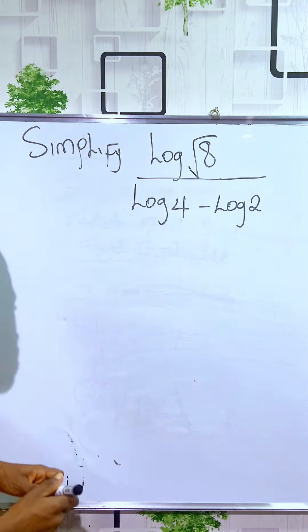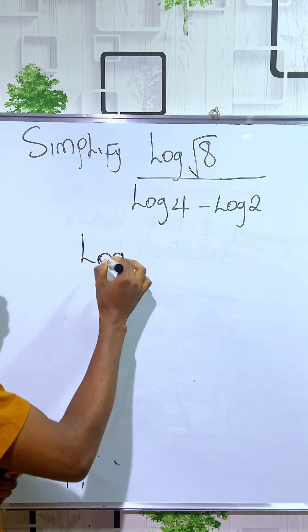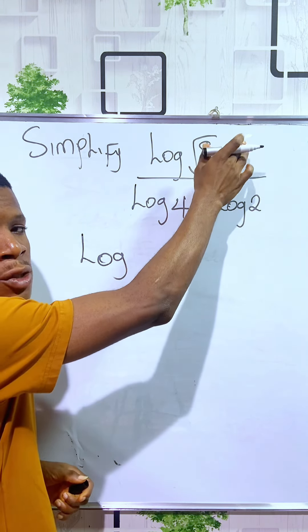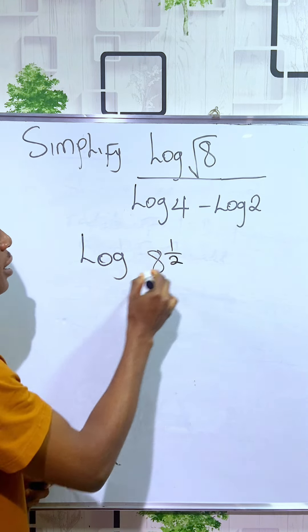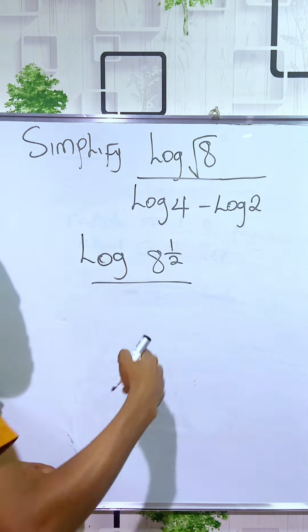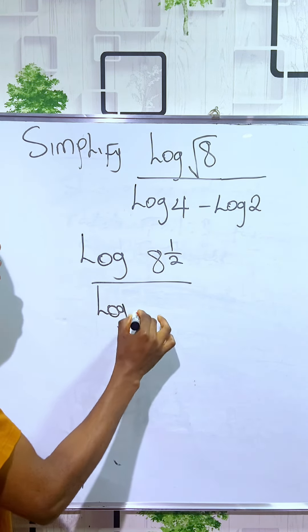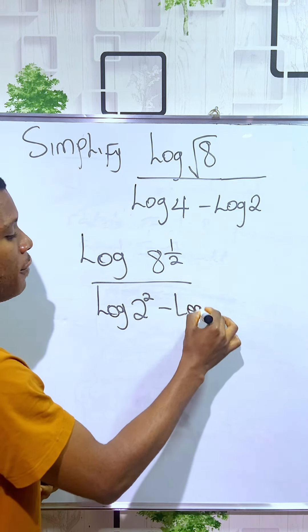Basically, if you look at the denominator, we can write it to be log of, you know that when you have a square root, it means raised to the power of half. You have 8 to the power of half, divided by log of 4. 4 can be seen as 2 squared, so I can write it as log of 2 squared minus log of 2.